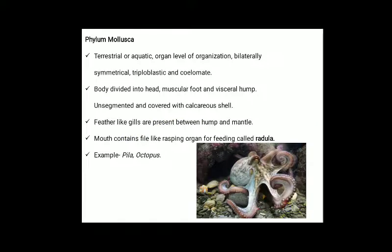Phylum Mollusca: they are terrestrial or aquatic with organ level of organization, bilaterally symmetrical, triploblastic and coelomate. Body is divided into head, muscular foot and visceral hump. Unsegmented and covered with a calcareous shell. Feather-like gills are present between the hump and mantle. Mouth contains a file-like rasping organ called radula. Examples: Pila and Octopus.